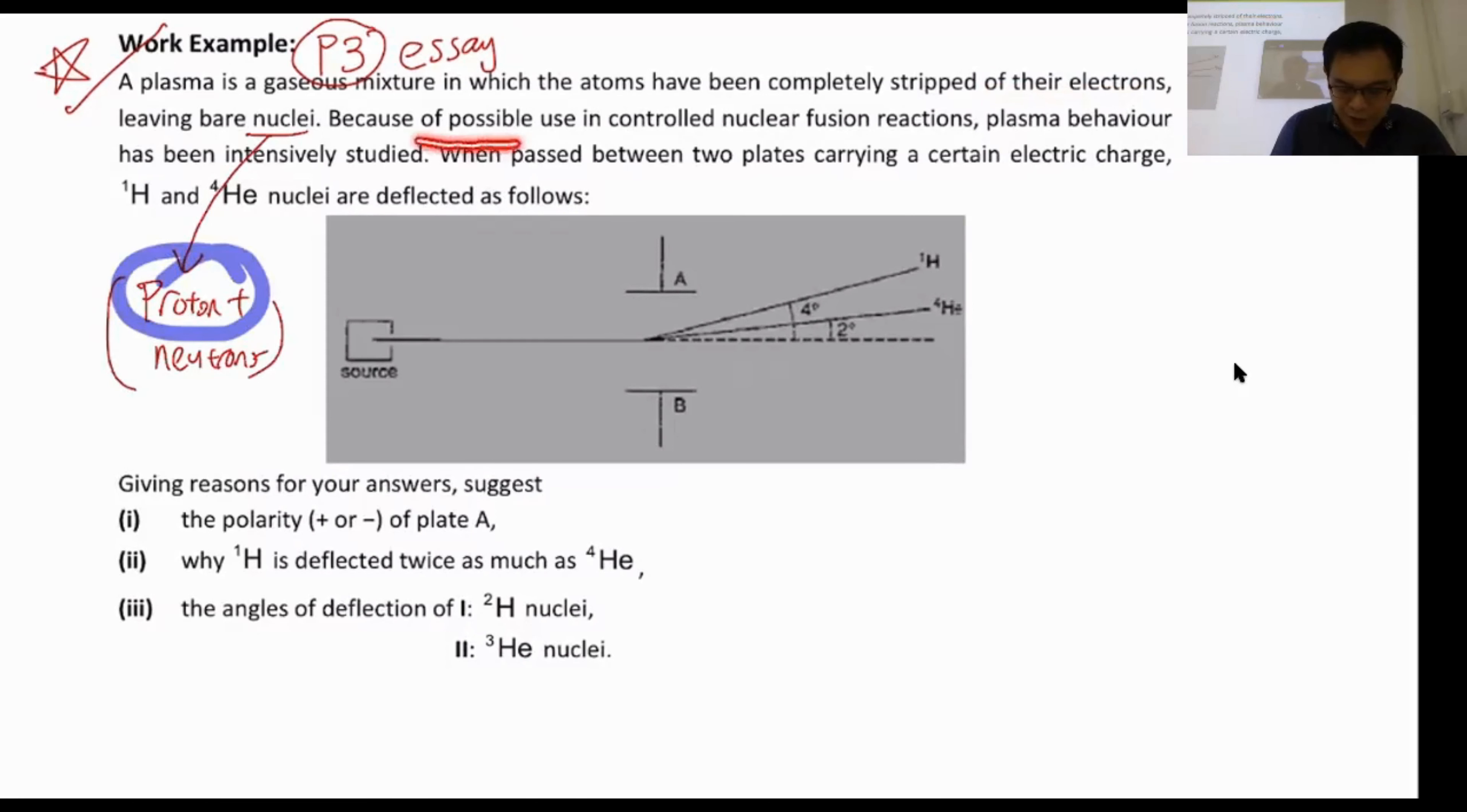Because of possible use in controlled nuclear fission reaction, plasma behavior has been intensively studied. So you have different nuclei. One H-nuclei, four He-nuclei are deflected as shown. Now, keep in mind, the H and the He are positively charged depending on the number of protons inside. So I would say that my hydrogen is positive because one proton. Helium on the other hand is two protons. If you check the periodic table, it's two protons, so two positive charge.